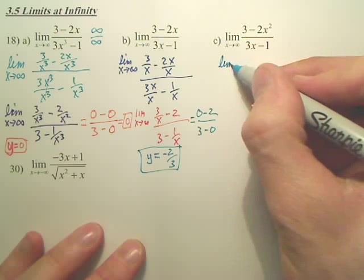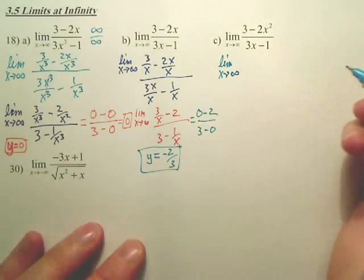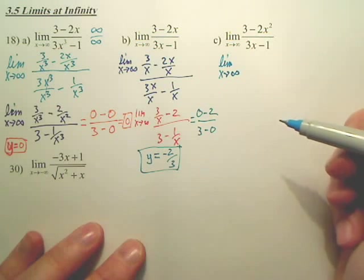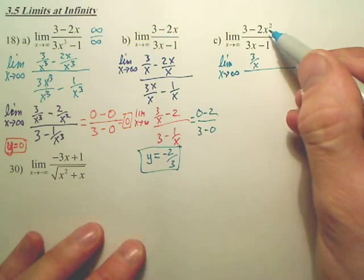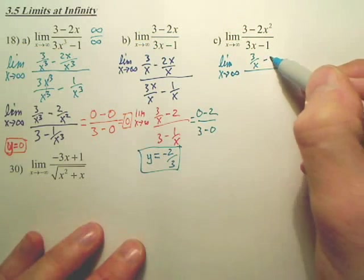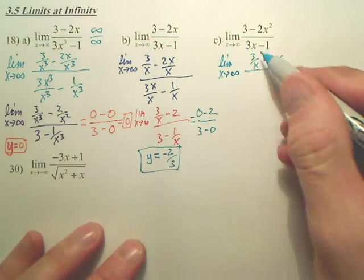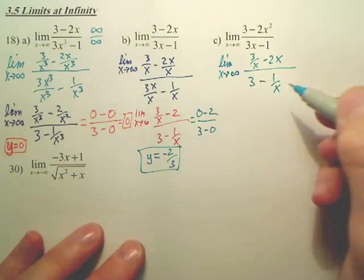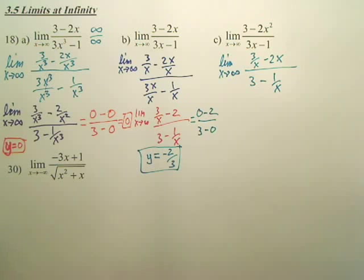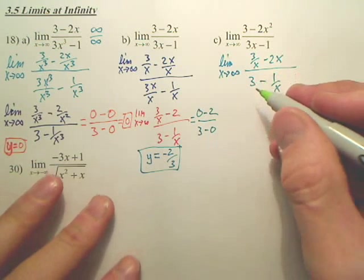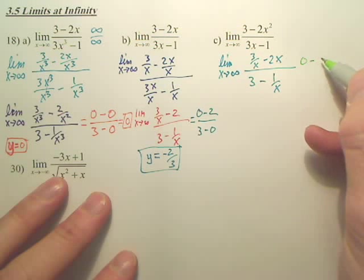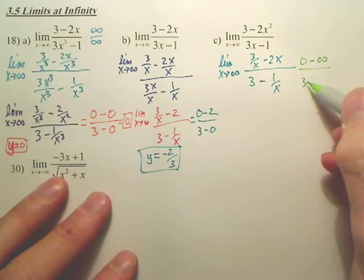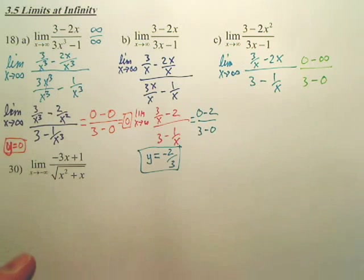For the last one, what are we going to divide everything by? x, correct. Let's skip all the work. When you divide by x: 3 over x, and then 2x divided by x gives 2x. Then here you get 3, and then 1 over x. Plug in infinity. When you plug in infinity, that's 0 minus — what's 2 times infinity? That's infinity. And that's 3 minus 0.